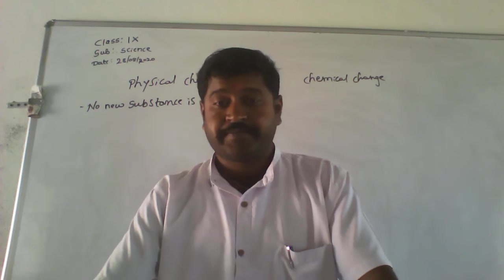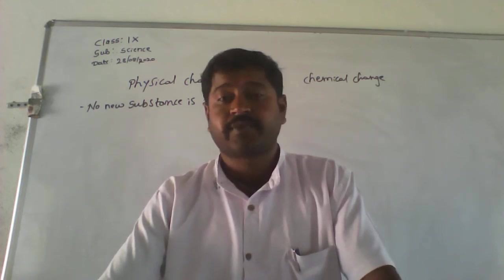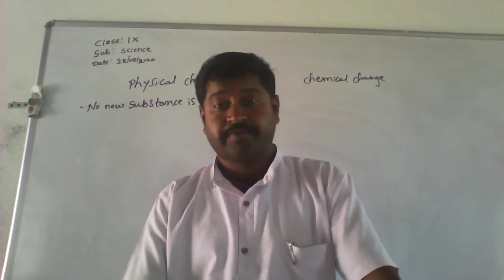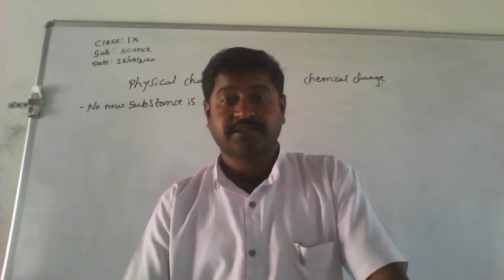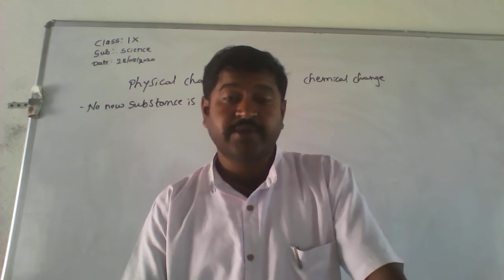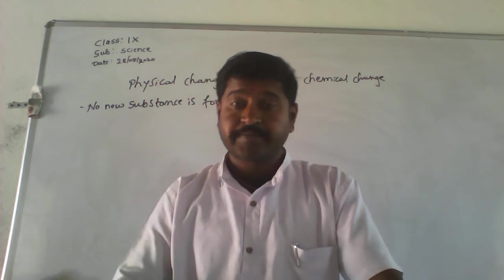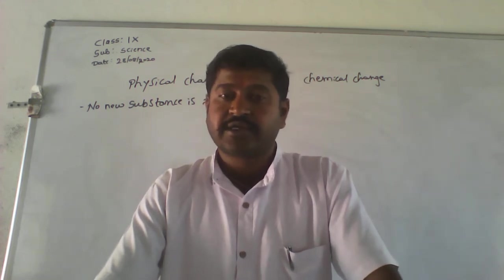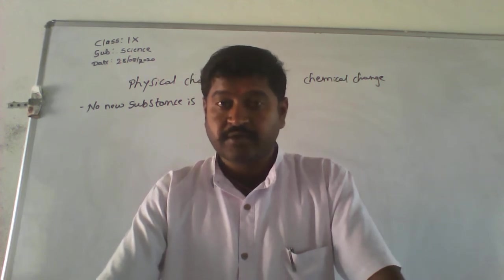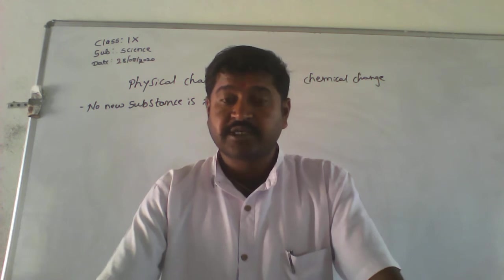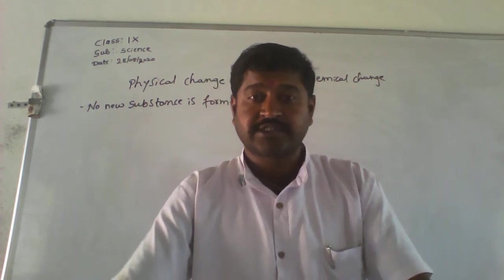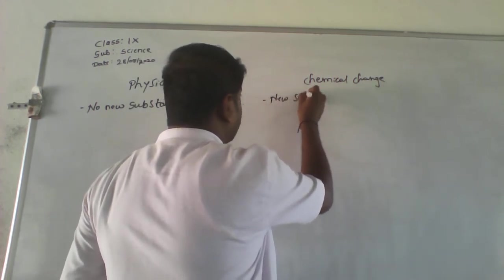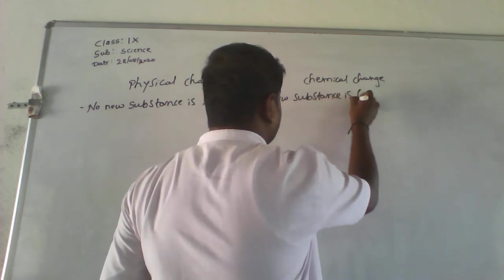While burning a candle — when we light the candle, the candle is undergoing a chemical change. Because it is giving out light and heat, and also emitting carbon dioxide into the environment. The candle was only made up of wax and a thread, but after burning there is some residue left behind. That states there is a new substance formed in chemical change.